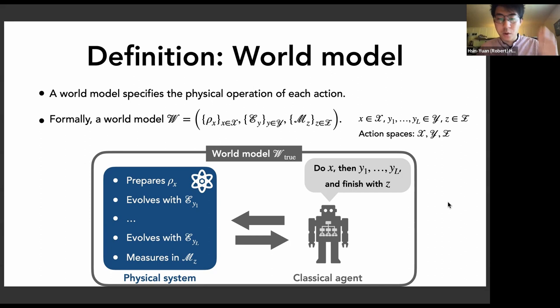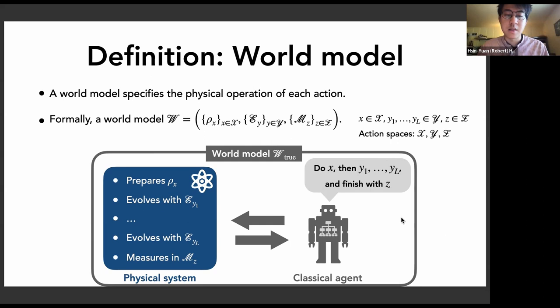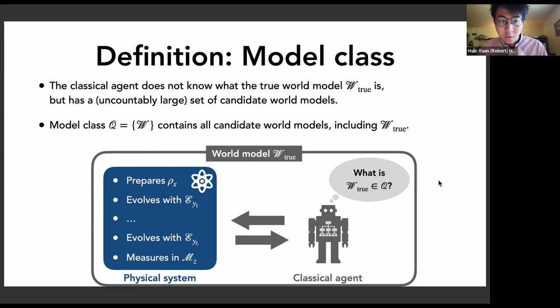For example, when you say you want to do a certain gate, physically what's being implemented is not exactly that gate — it's some CPTP map that might be close to the gate, or it might be completely wrong. The world model specifies that correspondence. There is a true world model W_true that encompasses the classical agent and the physical system, representing the true correspondence between the agent's actions and the physical operations — but the classical agent doesn't know what this true world model is.